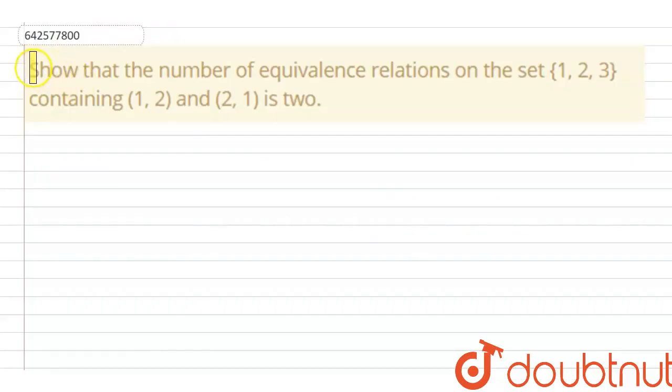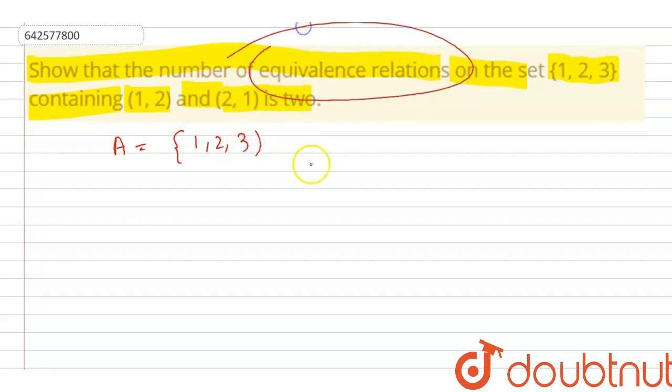Hello everyone, the question says that we have to show that the number of equivalence relations on the set {1, 2, 3} containing (1, 2) and (2, 1) is two. So we are given A is a set of {1, 2, 3}. We have to find the equivalence relation.